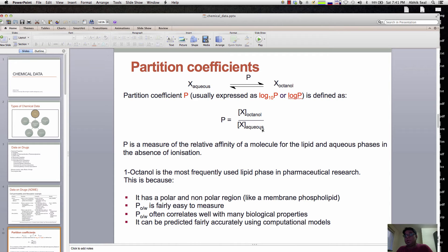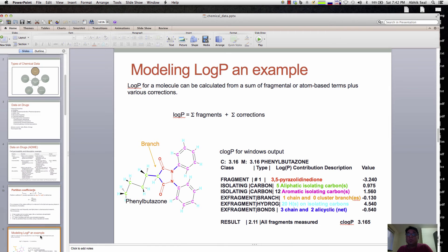Lipinski's rules say that compounds with log P below 5 are more promising as drugs. We use log P because it's fairly easy to measure and correlates well with many biological properties, and people have made accurate predictive models of log P.